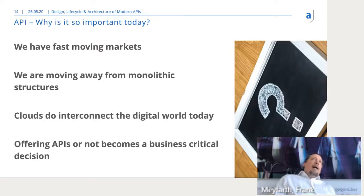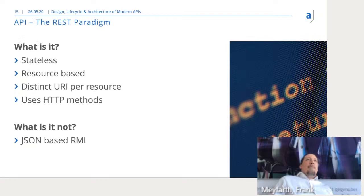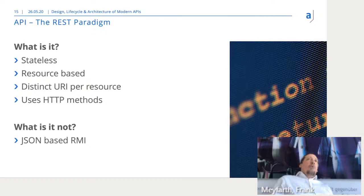When talking about APIs, we have to talk about the REST paradigm especially. REST over HTTP is the common protocol we use nowadays. REST means representational state transfer. First of all, it is stateless — which sounds strange since the name includes 'state.' REST is resource-based, and the protocol itself is totally stateless and should always be, because statefulness increases the complexity of a system a lot.